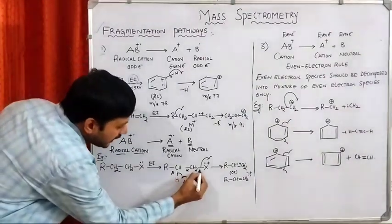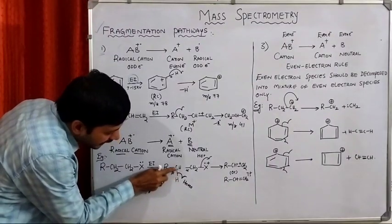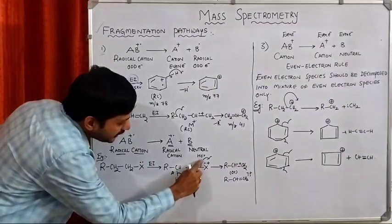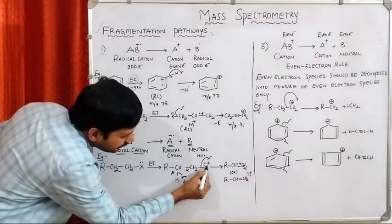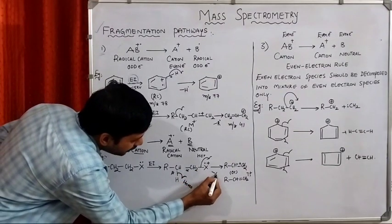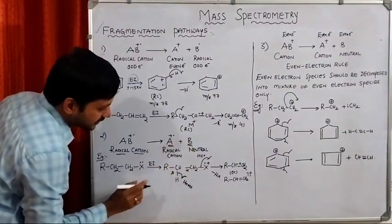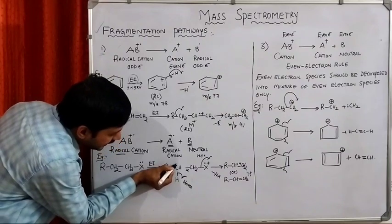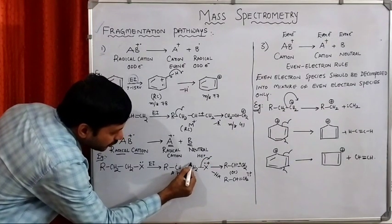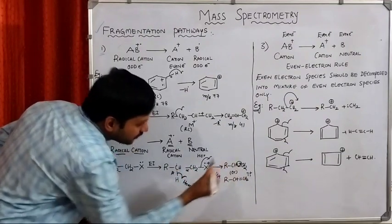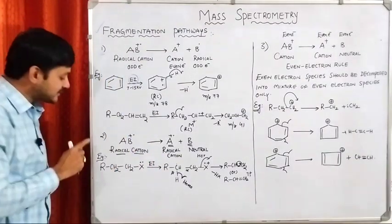At the beta bond, homolytic cleavage takes place, and at the X bond, heterolytic cleavage takes place. The homolytic cleavage generates radicals — an H radical and a C radical. The heterolytic cleavage gives X minus; together with the existing positive charge, they neutralize to give an X radical. The H is removed as H2, a neutral molecule. After that, the homolytic cleavage creates a radical at the carbon, and the heterolytic cleavage creates a positive charge on the carbon — giving a positive charge and a radical, which is a radical cation. This is the second pathway.